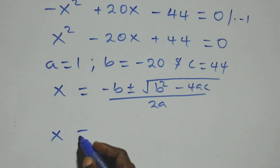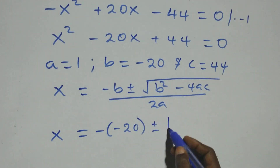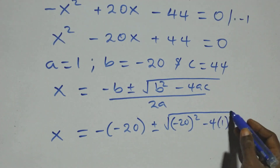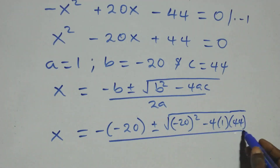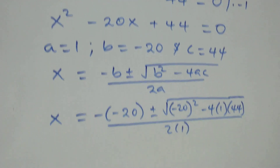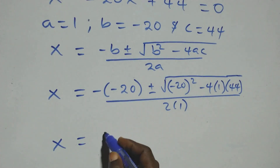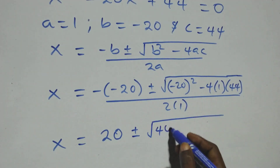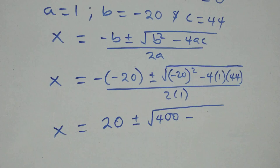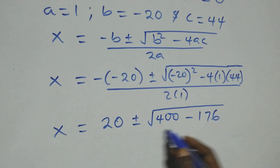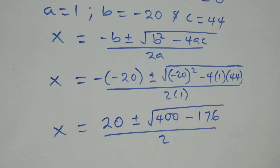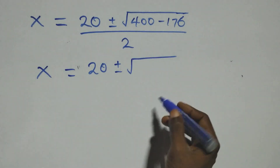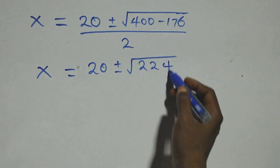Then we have x equals minus (minus 20), that is plus 20, plus or minus square root of (minus 20) squared, which is 400, then minus 4 times 1 times 44, which is 176, all over 2. This becomes x equals 20 plus or minus square root of (400 minus 176), which equals square root of 224, all over 2.